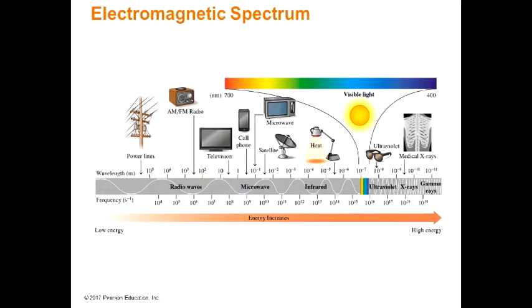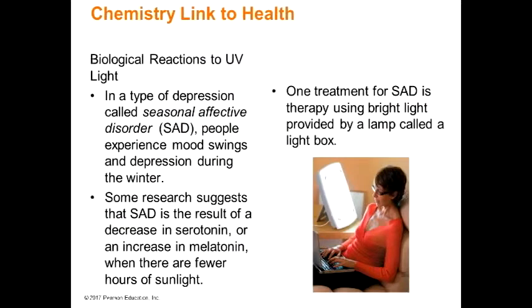Energy increases moving to the left on the spectrum. Here's an example of a biological reaction to UV light: a type of depression called seasonal affective disorder, or SAD. People experience mood swings and depression during winter, and one treatment is bright light therapy using a light box. A student mentions that in Alaska, where daylight is minimal in winter, light boxes are common in homes. It's helpful radiation that doesn't destroy anything — it simply resets body chemistry.